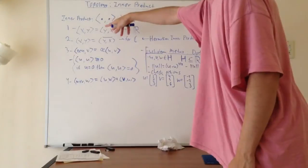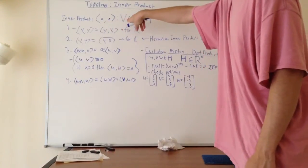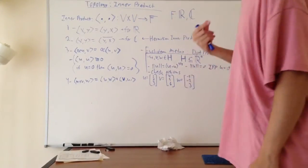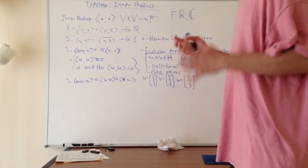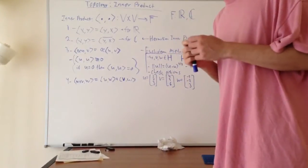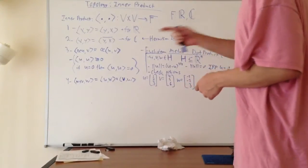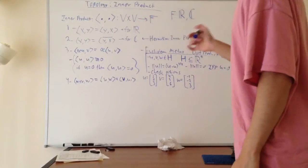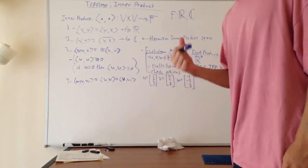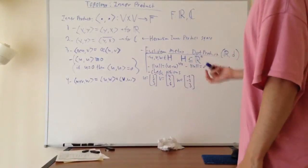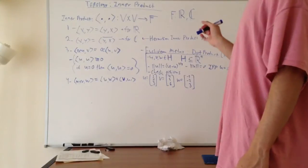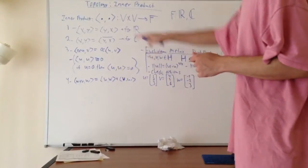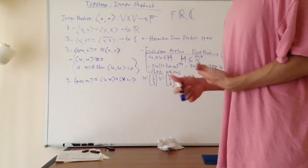The inner product is typically written with angle brackets and two dots. We take two vectors — it's defined with the vector space over a field. A good way to visualize what the inner product does is it takes two vectors and outputs a scalar. So we have two vectors V and V, and it outputs over a field F. If you don't know what a field is, just think of real or complex numbers. Like a dot product, we start with two vectors as our input, and our output is a scalar — that's really what the inner product is.